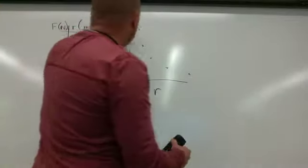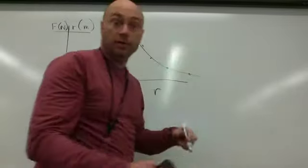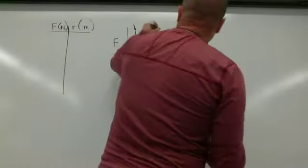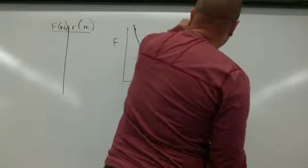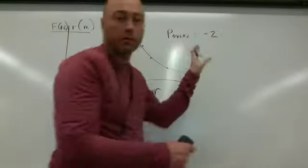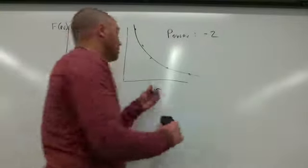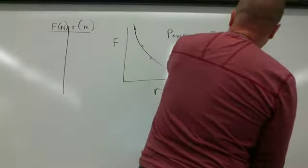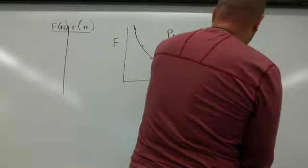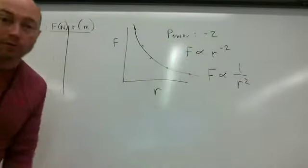You used the app, and it said the power is going to be to the negative 2 power. So if I want to linearize this, really what this is saying is that F is proportional to R to the negative 2, which is the same thing as saying F is proportional to 1 over R squared. So hopefully that makes sense.